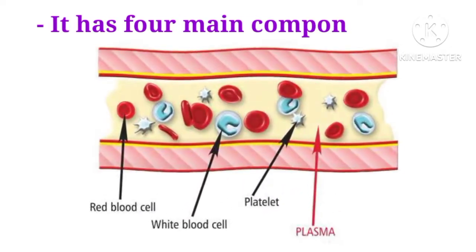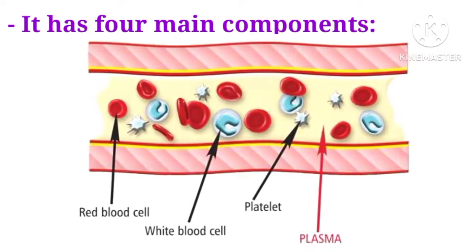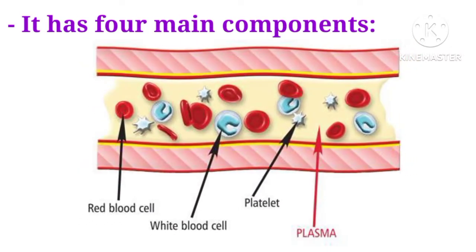Blood has 4 main components: 1st red blood cells, 2nd white blood cells, 3rd platelets, and 4th plasma. Blood has these 4 main components present in it.